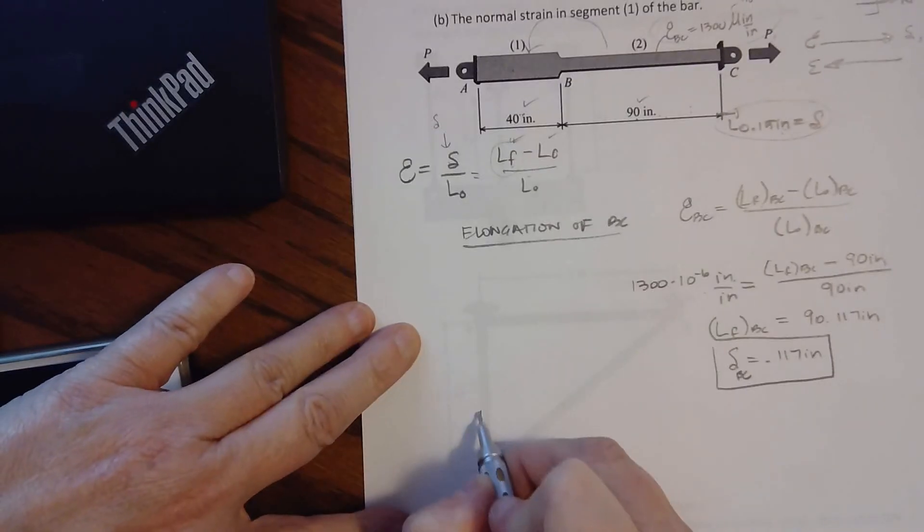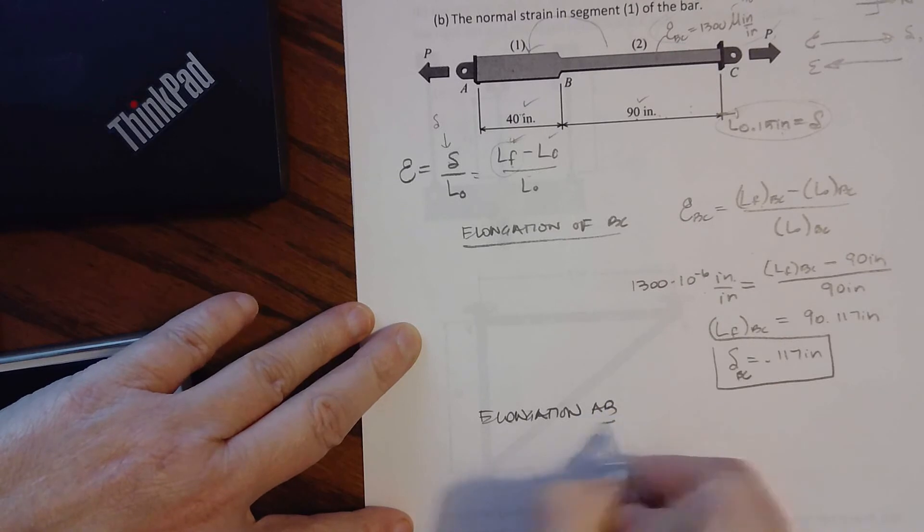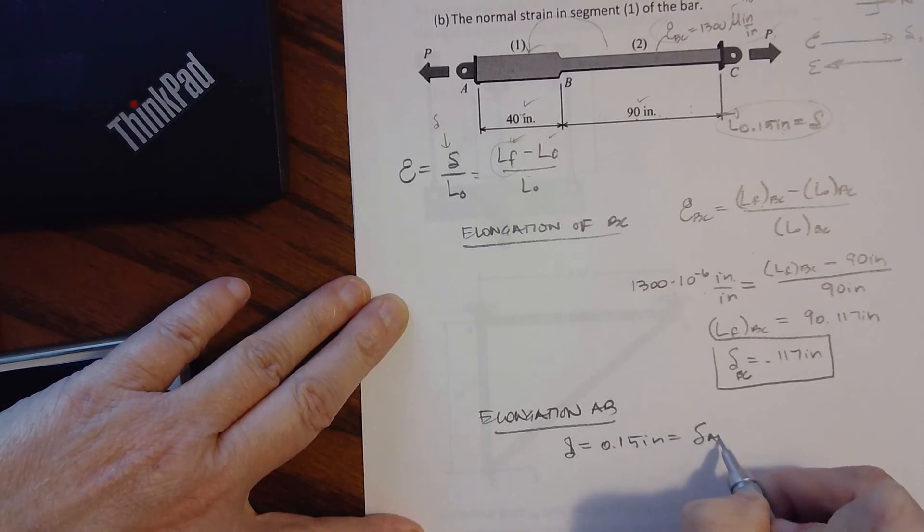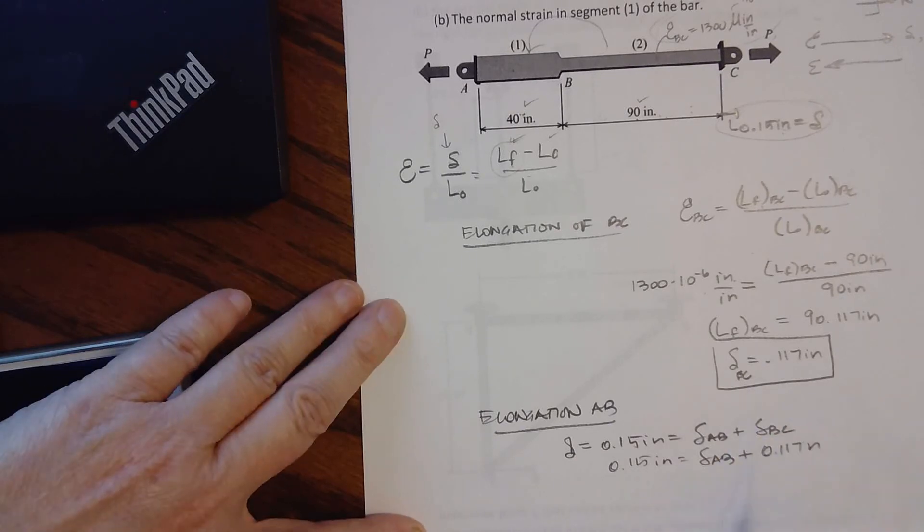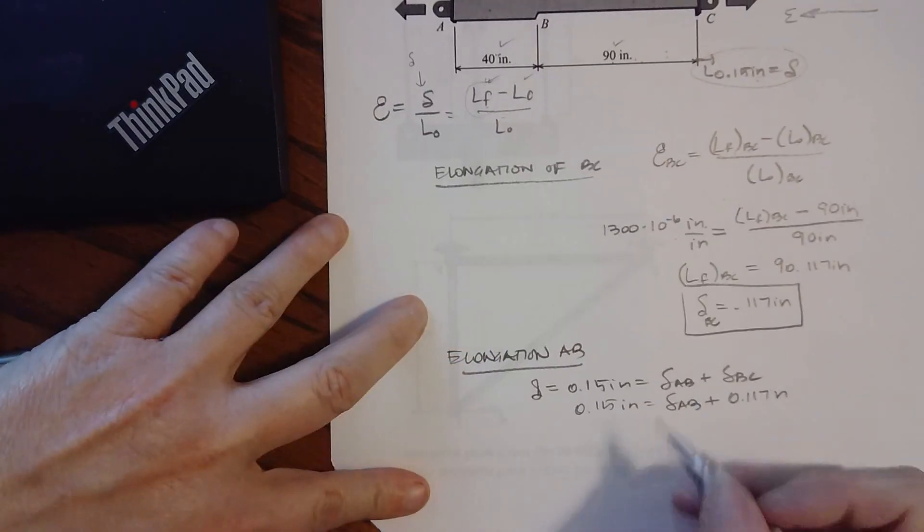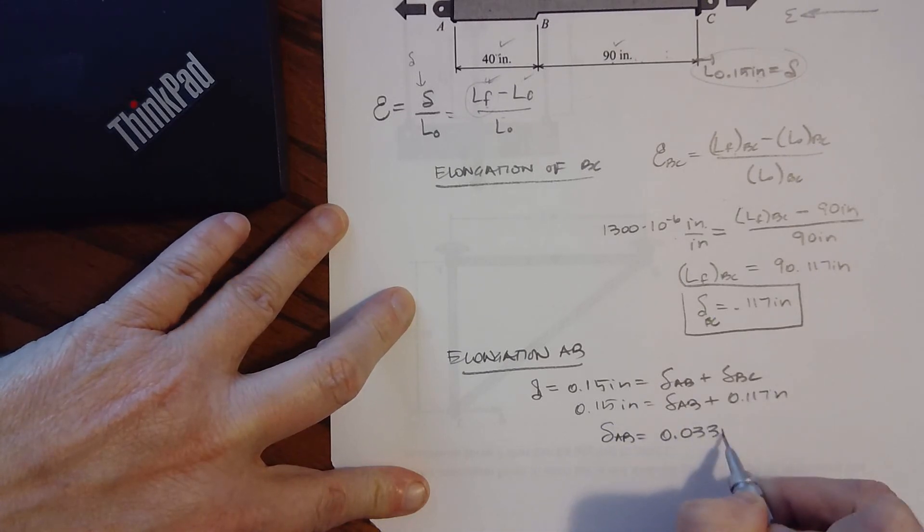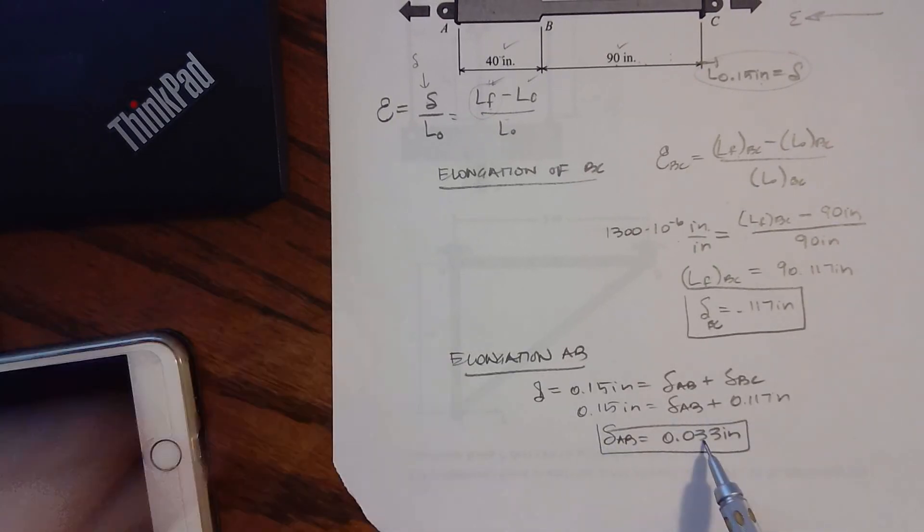And now we can go back, and if we're looking at the elongation of A to B, we know that the total elongation is 0.15 inches, and that has to be the elongation from A to B plus the elongation from B to C. So 0.15 inches equals delta AB plus 0.117 inches, which is delta BC. Do our subtraction, and delta AB equals 0.033 inches.